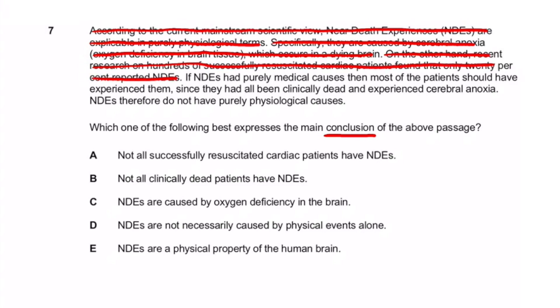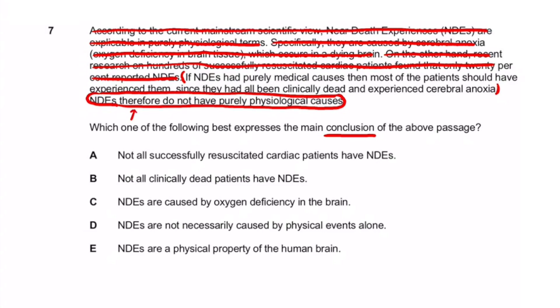The next sentence says: 'If NDEs had purely medical causes, then most of the patients should have experienced them, since they had all been clinically dead and experienced cerebral anoxia.' This is the author's opinion — he's saying 'if this were true, then surely this should happen.' So far, this is the most opinionated sentence. Then the final sentence: 'NDEs therefore do not have purely physiological causes.' This is clearly the most opinionated — he's making a bold statement and using the word 'therefore.'